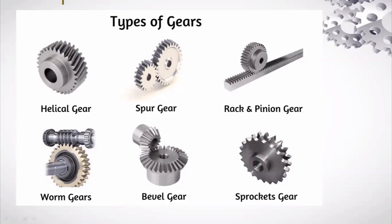The profile of the teeth will vary, giving different names: helical gear, spur gear, rack and pinion, worm gear, bevel gear, sprocket gear. Depending on the profiles, gears are given different names and different functionalities. It is used to transmit motion and power by engaging the teeth - only by engaging the teeth is it possible to transmit.